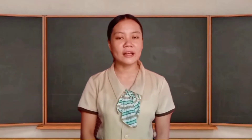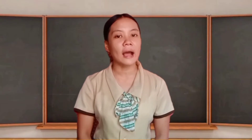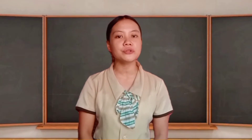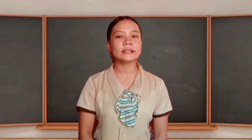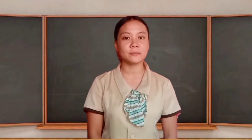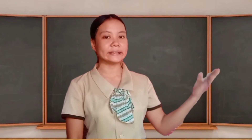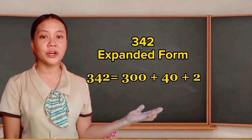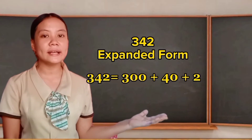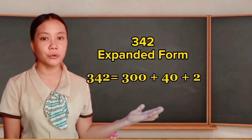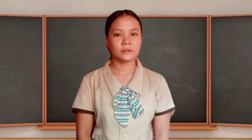Now, class, we illustrate how 342 can be expressed using addition in writing the expanded form. We simply write 342 in expanded form like this: 300 plus 40 plus 2 is the expanded form of 342. Did you get it, class?